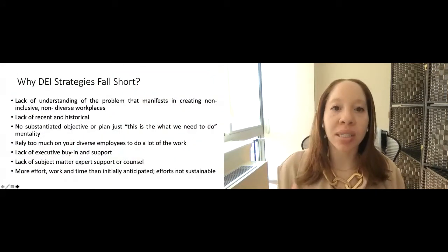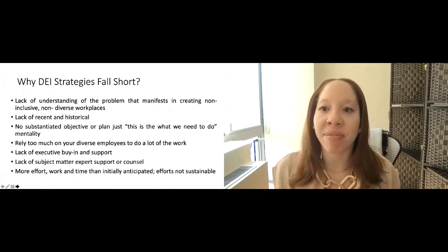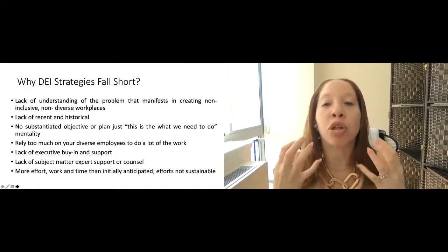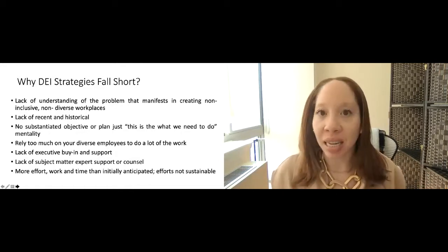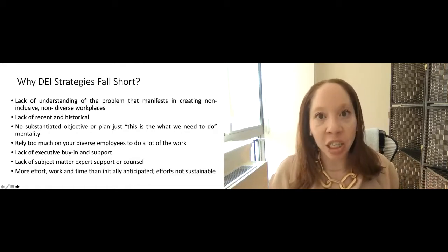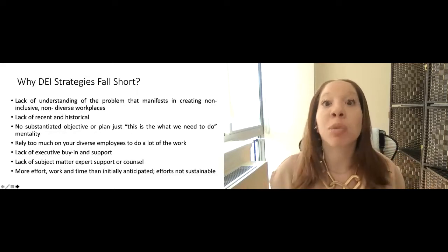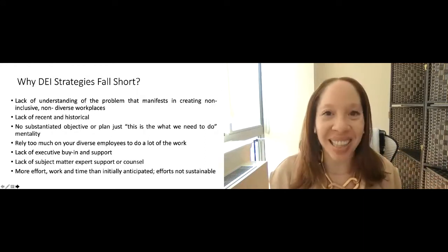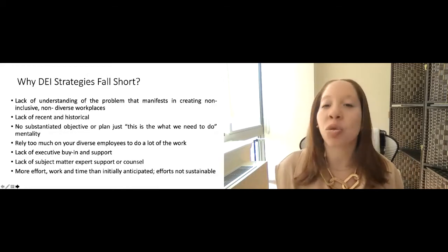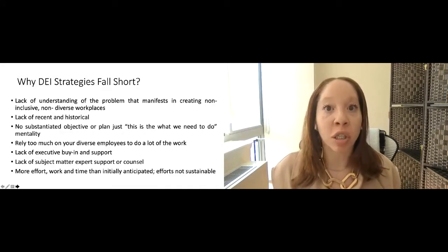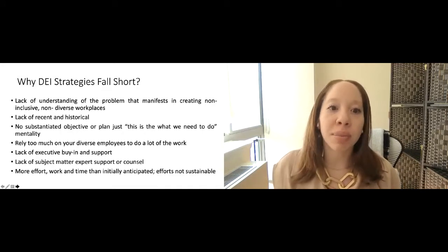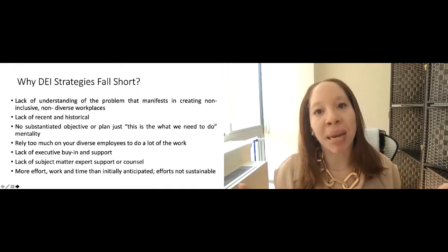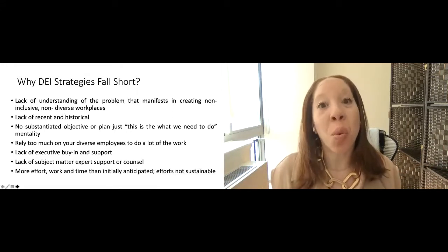So why do D&I strategies fall short? Firstly, there's a lack of understanding of the problem that manifests in creating non-inclusive, non-diverse workplaces. Leaders are not taking the time to really understand the true problem and how that problem can show itself in various elements of your business, from profitability, to employee engagement, from performance management. There are multiple layers to your D&I strategy, and just putting a blanket statement over all the problems is not going to get the solution you need. You need to be focused. There's a lack of recent and historical information. You've never counted data before. You never looked at data before. So you don't have any baseline. There's no substantiated objective or plan, just this is what we need to do mentality. So, again, it's just rushing to the finish line without thinking and being methodical on what we really actually need to do and why we're actually doing it.